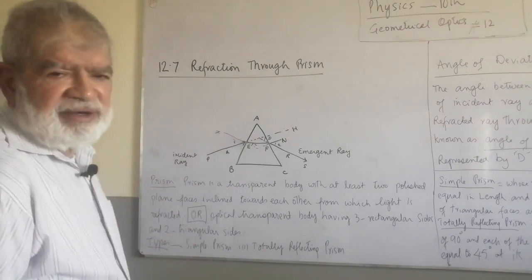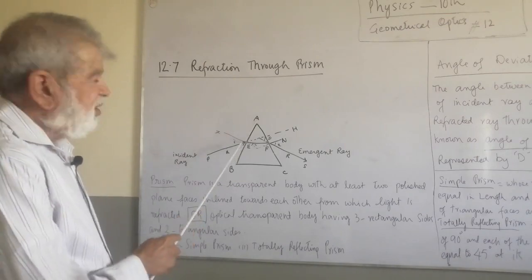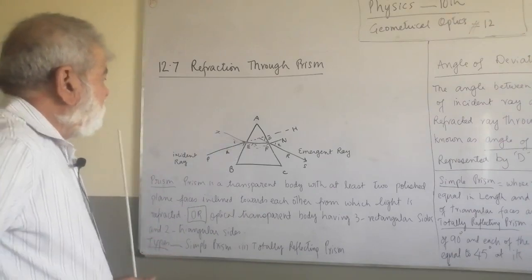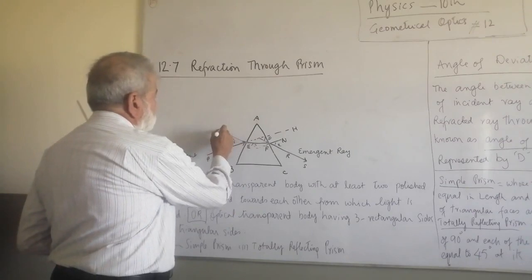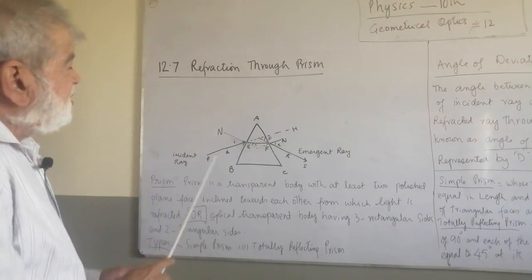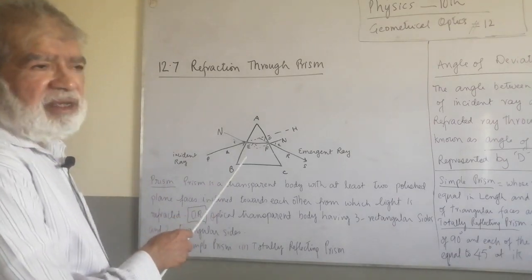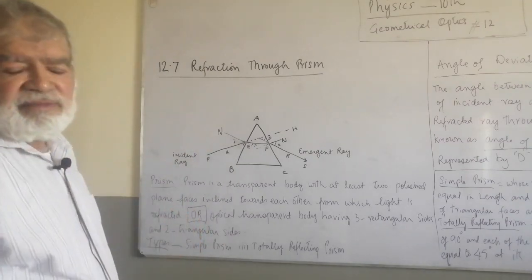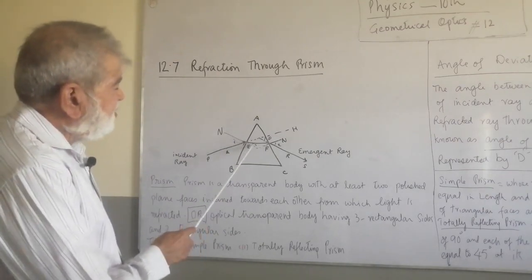EF is the refracted ray. The angle of incidence at this face AB. N is the normal. This is the normal that we have drawn. NE is the normal. The angle of incidence is the incident ray mixed with the normal at the point of incidence. I is the angle of incidence. And the angle of refraction is R.